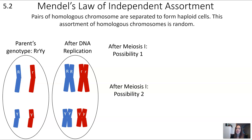Mendel has another law: independent assortment. The big idea is that pairs of homologous chromosomes are separated to form haploid cells, and this assortment of homologous chromosomes is random. Now we have two different traits coded for by genes on two different chromosomes — big R, little r, and big Y, little y. This is what it looks like before and after replication. Can you show what it might look like after the first division of meiosis, considering two possibilities?